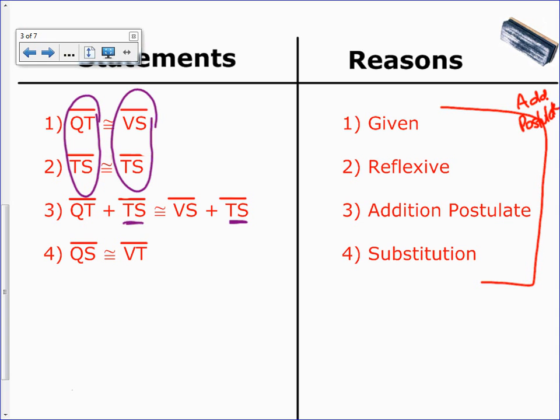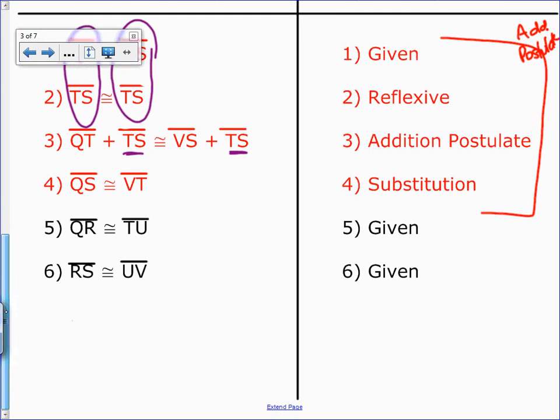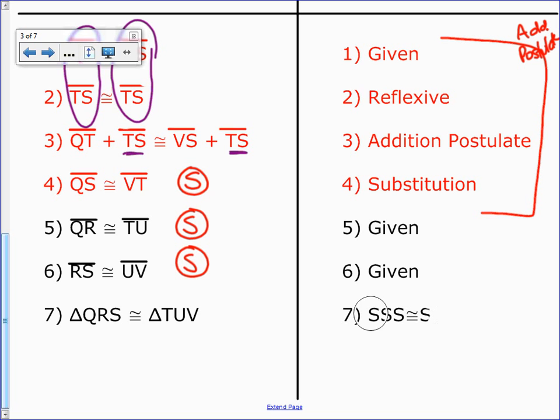Now that I have a side, go back to our other givens. QR congruent to TU, given. RS congruent to UV, given. This gave us a side, this gave us a side, and this gave us a side. So we can say the two triangles are congruent to each other, side, side, side.